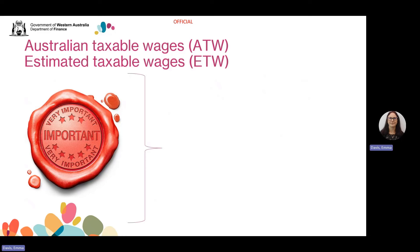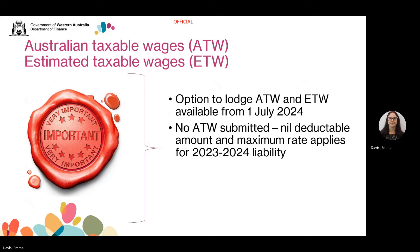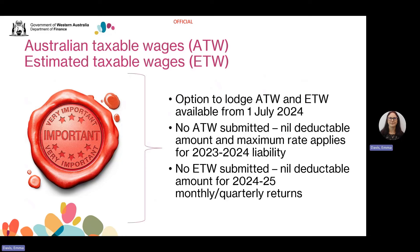Let's now look at Australian taxable wages and estimated taxable wages and why it's important you submit them. The functions in Revenue Online for you to lodge these are available from 1 July and should be lodged by 22 July this year as 21 July falls on a weekend. For clients required to lodge Australian taxable wages, if your or your group's Australian taxable wages is not lodged by the due date, this will result in a nil deductible amount being applied for the financial year and the maximum rate of tax being applied to the total WA taxable wages. For clients required to lodge estimated taxable wages, if they're not lodged by the due date, no deductible amount will be applied for the monthly and quarterly returns for the following financial year.